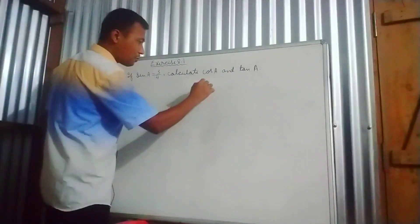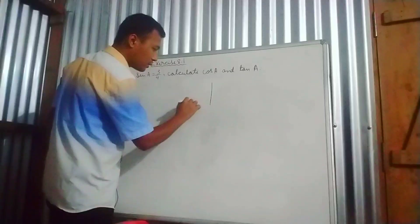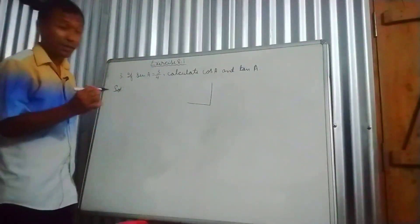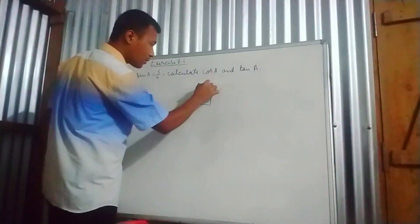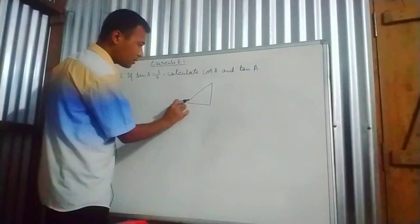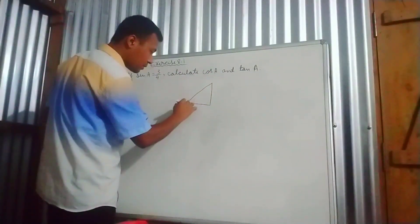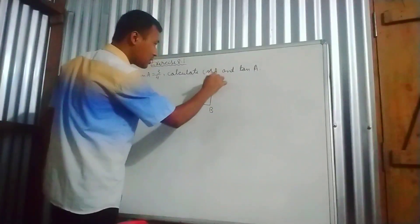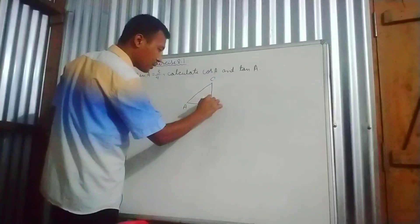So I have to draw the figure. Let me draw the right angle triangle. This point is A, this is B and this is C. It is right angle at B.